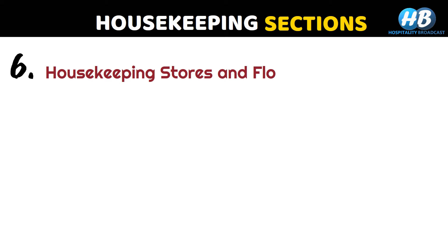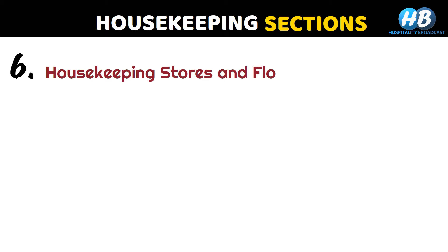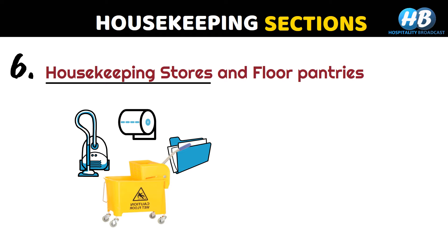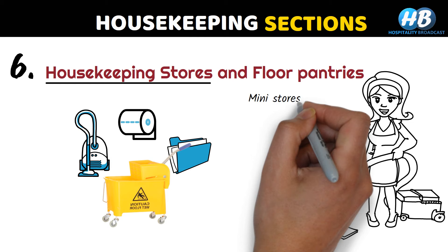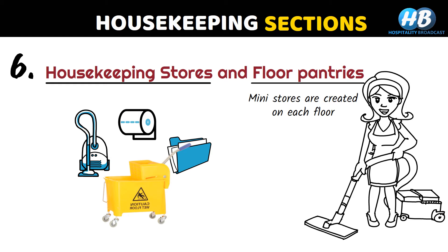Finally, we have housekeeping stores and floor pantries. Housekeeping manages its own store where housekeeping equipment, cleaning supplies, guest stationeries, and amenities are kept. As a hotel is a large establishment, it is not feasible for housekeeping personnel to come to a common store for every requirement. So stores are created on each floor, called housekeeping pantries, stocked with linen, guest room amenities, and cleaning chemicals, so staff don't have to rush to the main store and waste time and energy.